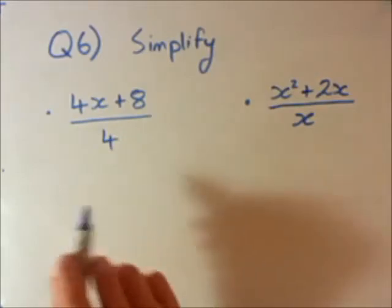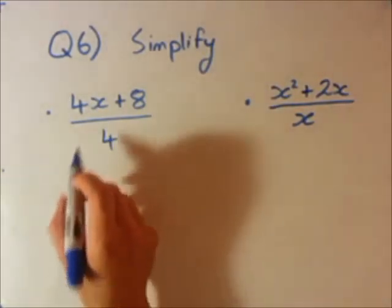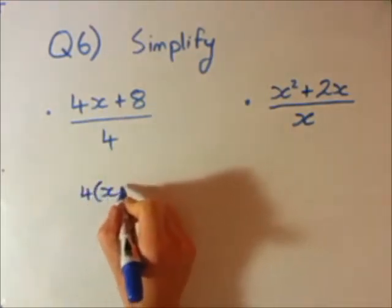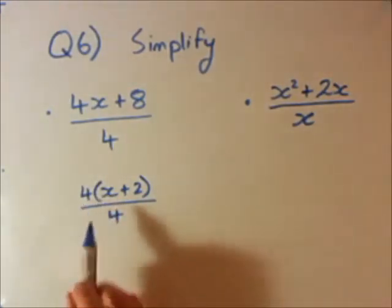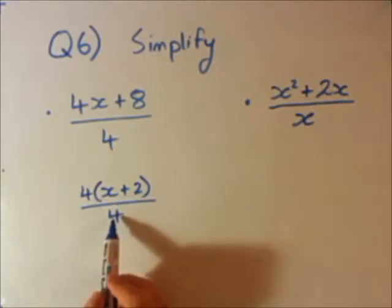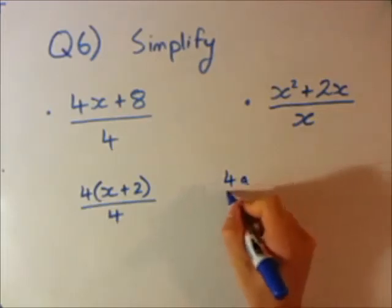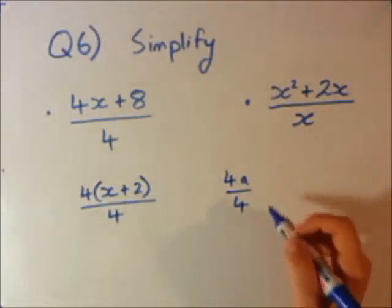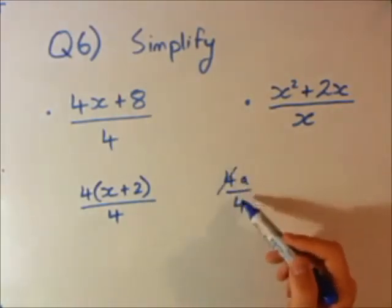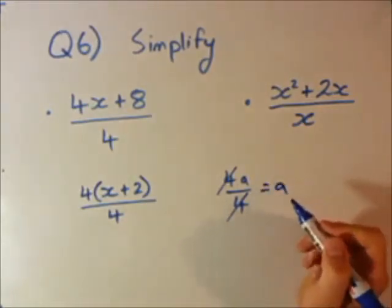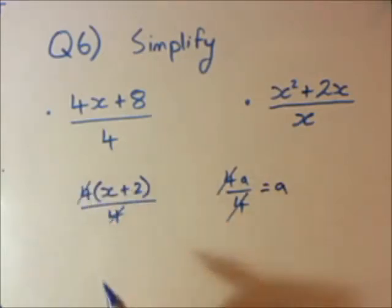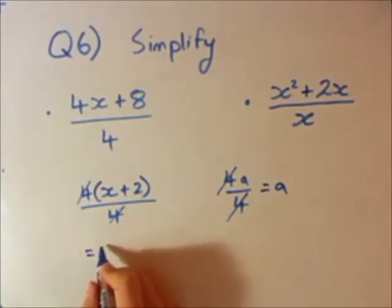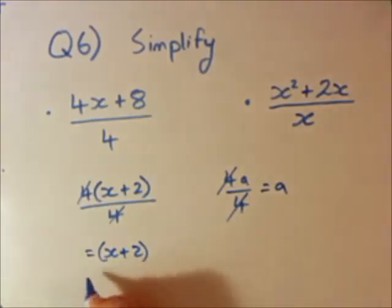Let's look at this first one. We're going to factorise 4x plus 8. I'm going to write 4x plus 8 as 4 times (x plus 2), all divided by 4. So I've factorised the top line. Now I can divide. If I have 4 times (x plus 2) over 4 — just like 4a over 4 leaves just a — I can do the same thing and divide the numbers. That leaves just x plus 2. So my final answer is x plus 2.